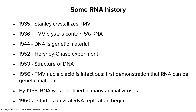A little bit of history. Tobacco mosaic virus, remember, was the first virus to be discovered at the end of the 1800s. That virus was crystallized in 1935 at Princeton University — the first virus to be crystallized. In 1936, it was found that those crystals contained 5% RNA. This was surprising; people didn't know what the RNA meant.